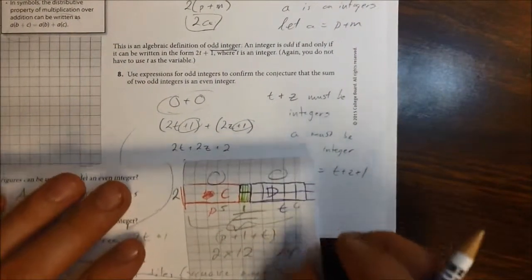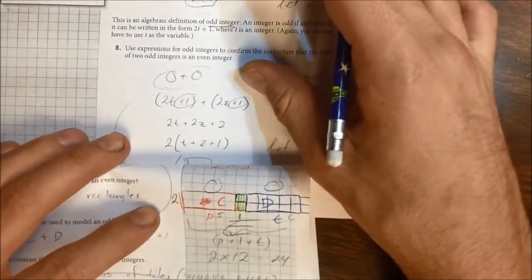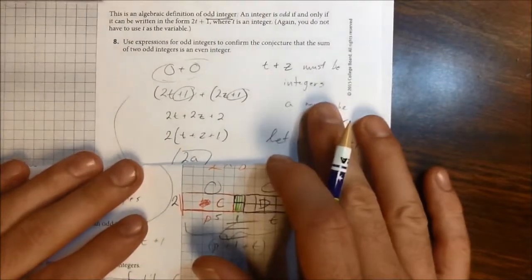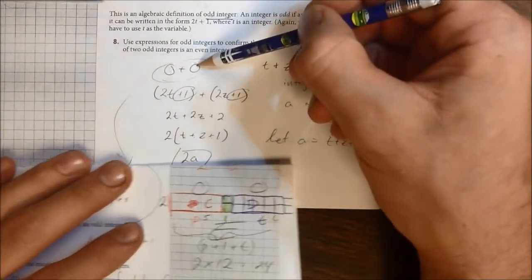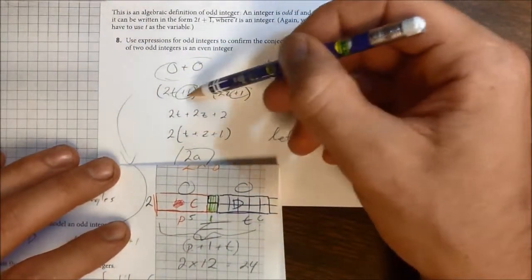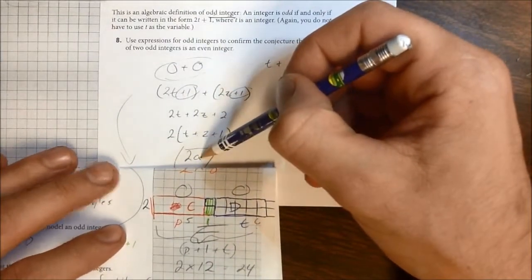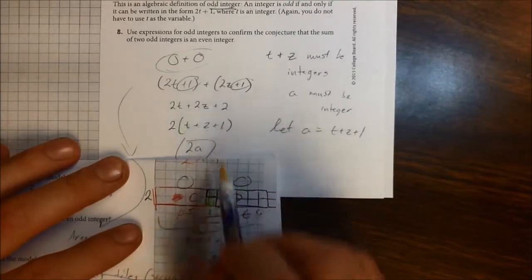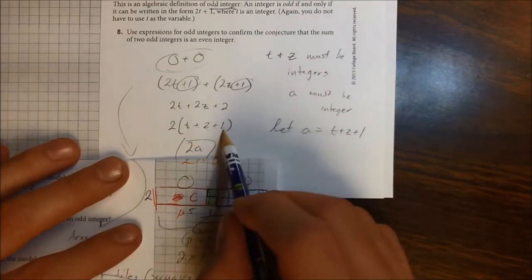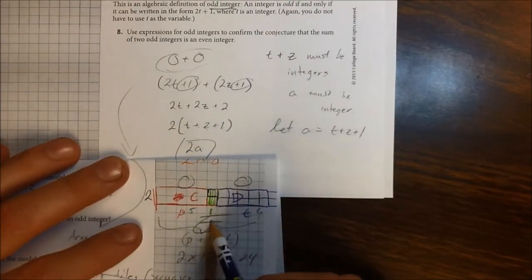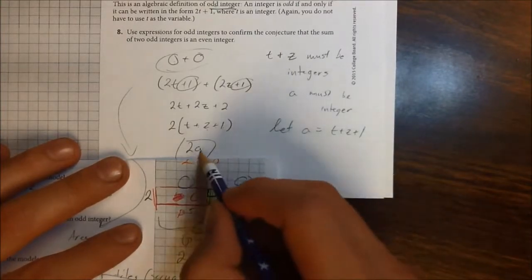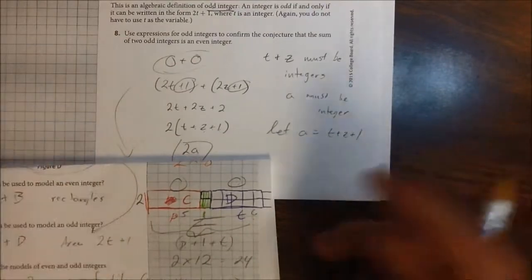Because down here, where we had two odds, we had odd plus odd, and then we worked all the way down to prove that it was an even. Well, same thing here, odd plus odd. So you had this t plus z, that integer plus integer, and then this extra 1. But we knew that that was just going to be an integer. We just let it be a in the end.